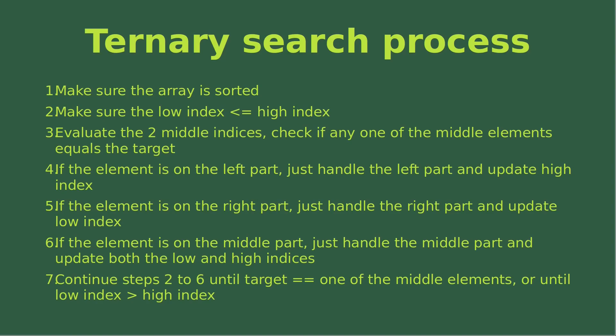We have to evaluate the two middle indices according to the low and high indices. And then we check if any one of the middle elements equals the target or not. If the element is on the left part, then we just handle the left part and update the high index. If we find that the element is on the right part of the array, we handle the right part, and it means that we have to update the low index.